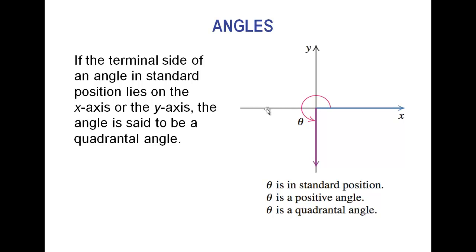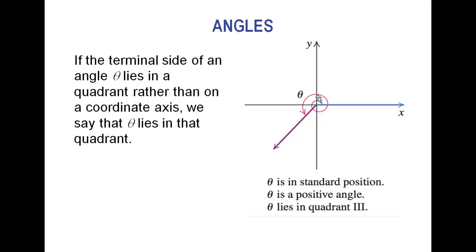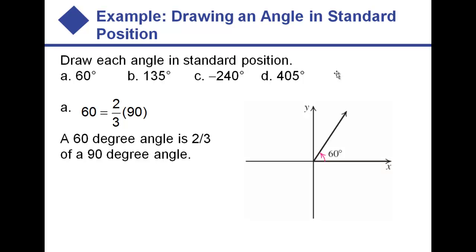So counterclockwise, going all the way around to there, would be 270 degrees. There is a lot of vocabulary in these little boxes on the left as we go through these slides — I wouldn't worry about it too much. Just know the basic stuff. Let's draw each angle in standard position. 60 degrees is two-thirds of 90, so there's our angle, basically two-thirds of the way between the x and y axis.